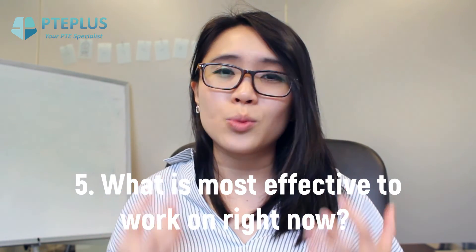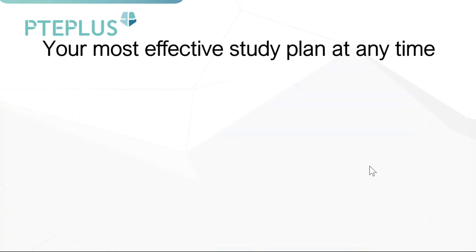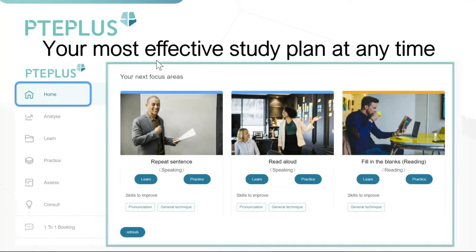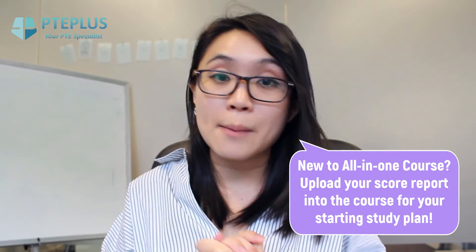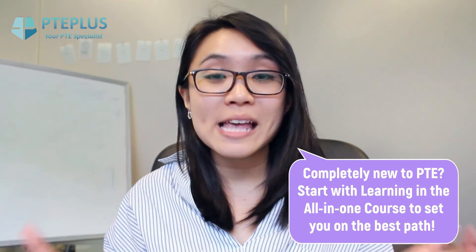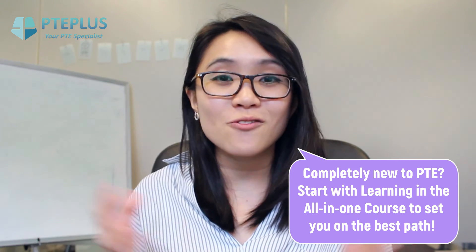To know what you should really be working on, use the next focus areas feature in the home section of your all-in-one course. All your performance is analyzed, and the course provides the top three things most efficient for you to work on to get the most uplift in your scores. This is calculated live, so it lets you know when you've improved enough and what area to move into next. If you've done the exam before, upload your score report into the course so it can start analyzing you.